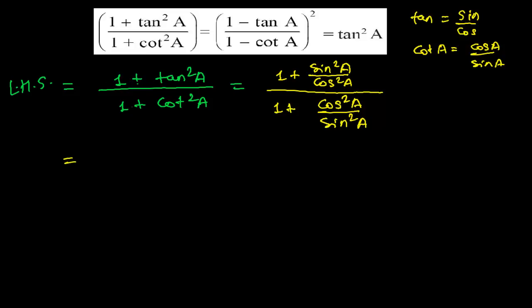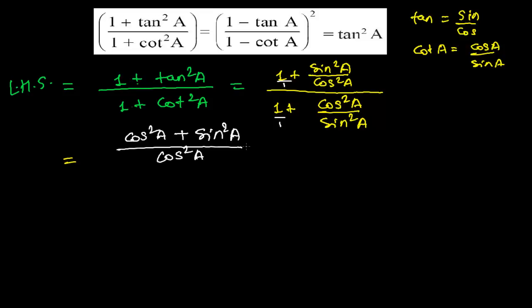Now, if there is nothing then there is 1. The LCM of 1 and cos square will be cos square a. This 1 will divide cos square a giving 1, and 1 will get cos square a. That cos square a multiplies 1 to give cos square a. Plus, cos square a divides cos square a to give 1, and 1 multiplies sin square a to give sin square a.